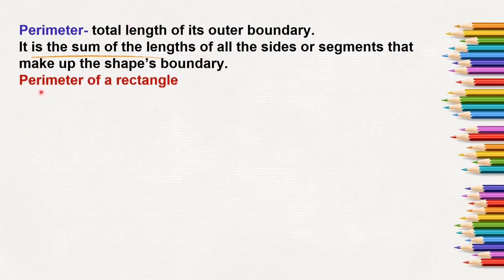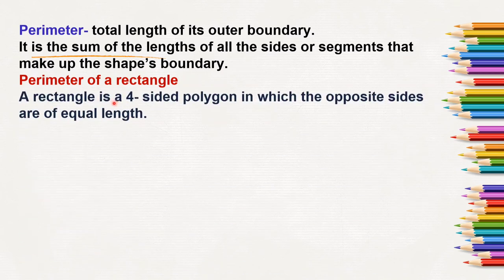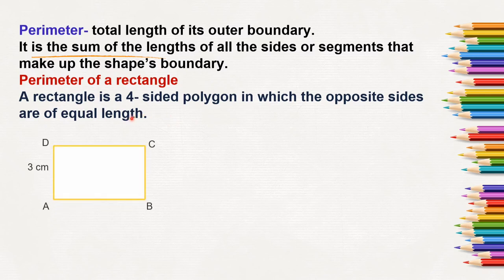Next, let us find out the perimeter of a rectangle. A rectangle is a four-sided polygon in which the opposite sides are of equal length. We all know in a rectangle, the opposite sides are of equal length.